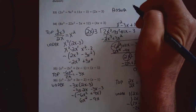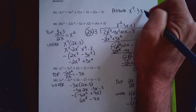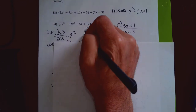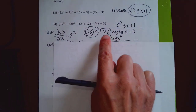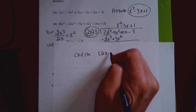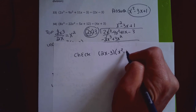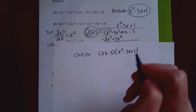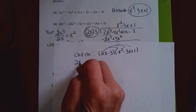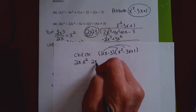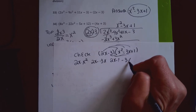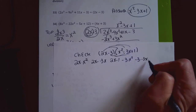Since the remainder is zero, I can check. I'll multiply the outside term by my answer, or I can do it in either order — it should equal what's under the division bar. I'll take the smaller binomial, 2x minus 3, and multiply it by x squared minus 3x plus 1. To do this multiplication, I go 2x times x squared, 2x times minus 3x, 2x times 1, then minus 3 times x squared, minus 3 times minus 3x, and minus 3 times 1.